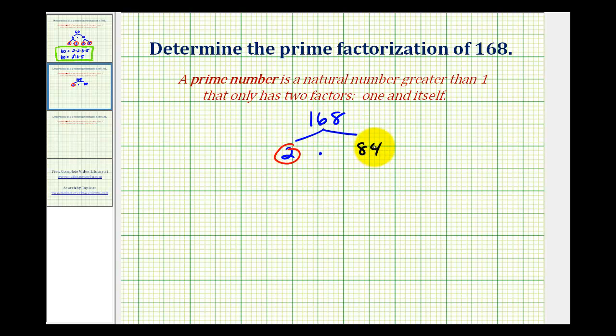Now 84 is not prime, and since 84 is still even, we can write 84 as two times 42. And we'll go ahead and circle two, because we know that's prime.